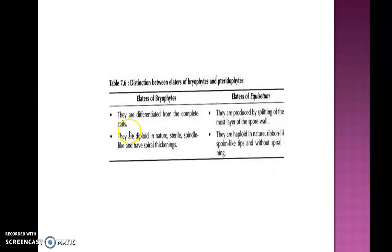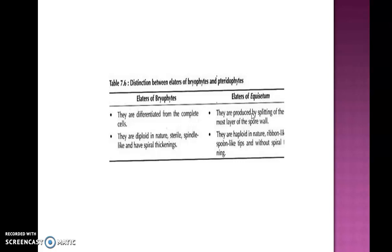How do elaters of bryophytes differ from elaters of Equisetum? In bryophytes, elaters are present in certain species, formed from complete or specialized cells, are diploid, sterile, spindle-shaped, and have spiral thickening. But in Equisetum, elaters are produced on the outermost wall layer of the spore called epispore. Since they are developed on haploid spores, they are haploid in nature, ribbon-like with spoon-shaped tips, and without spiral thickening.